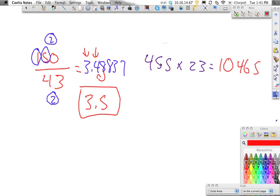Now if we look, we have 3 sig figs right here, and we have 2 sig figs right there. So our answer can only have 2 sig figs. So here's a significant figure, and here's a significant figure.